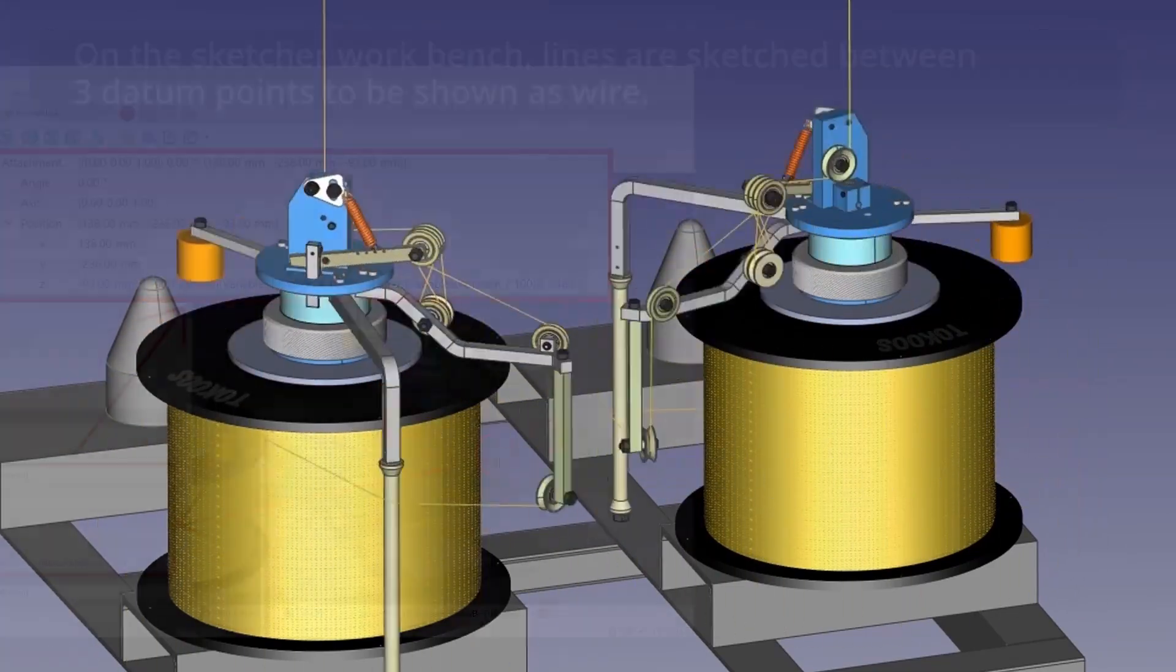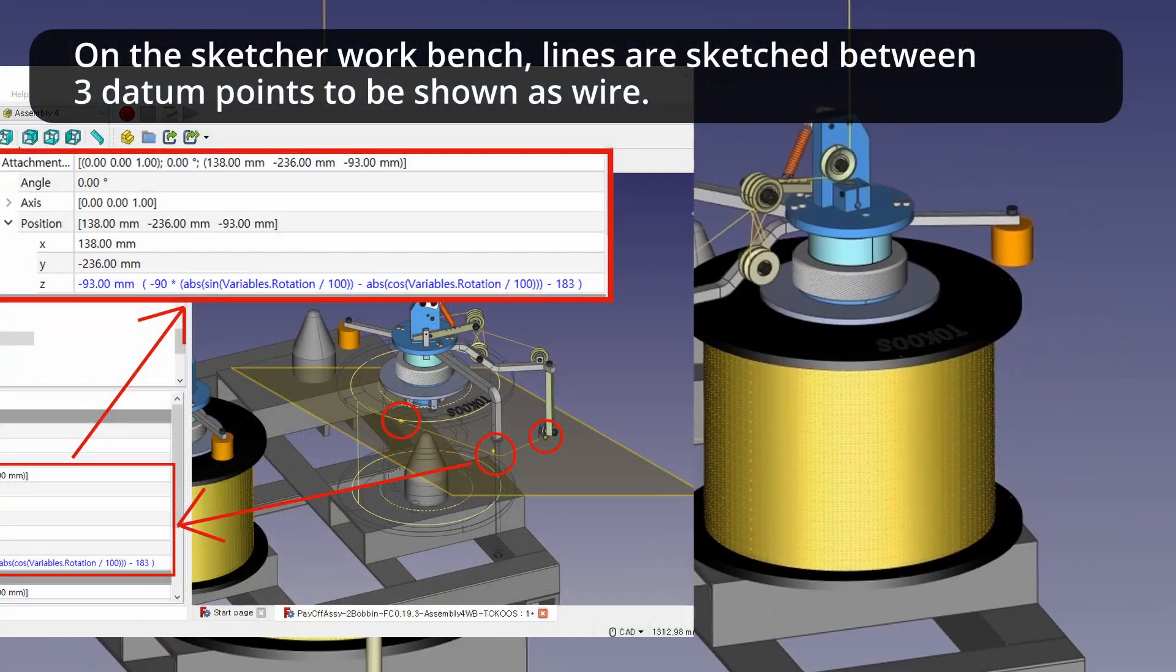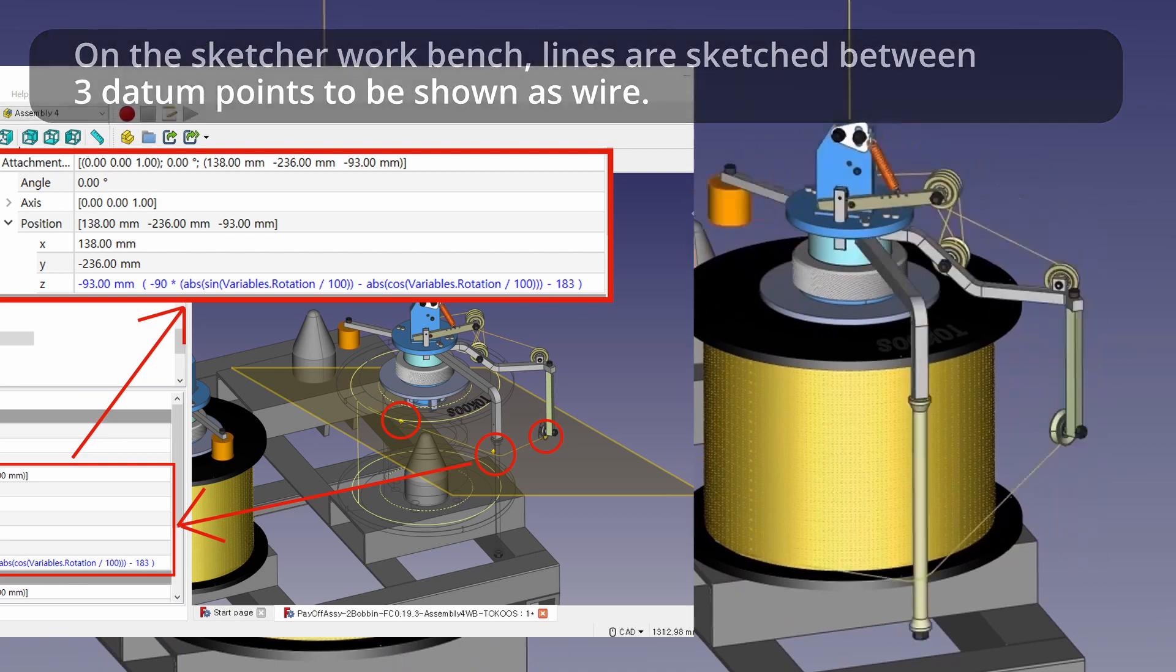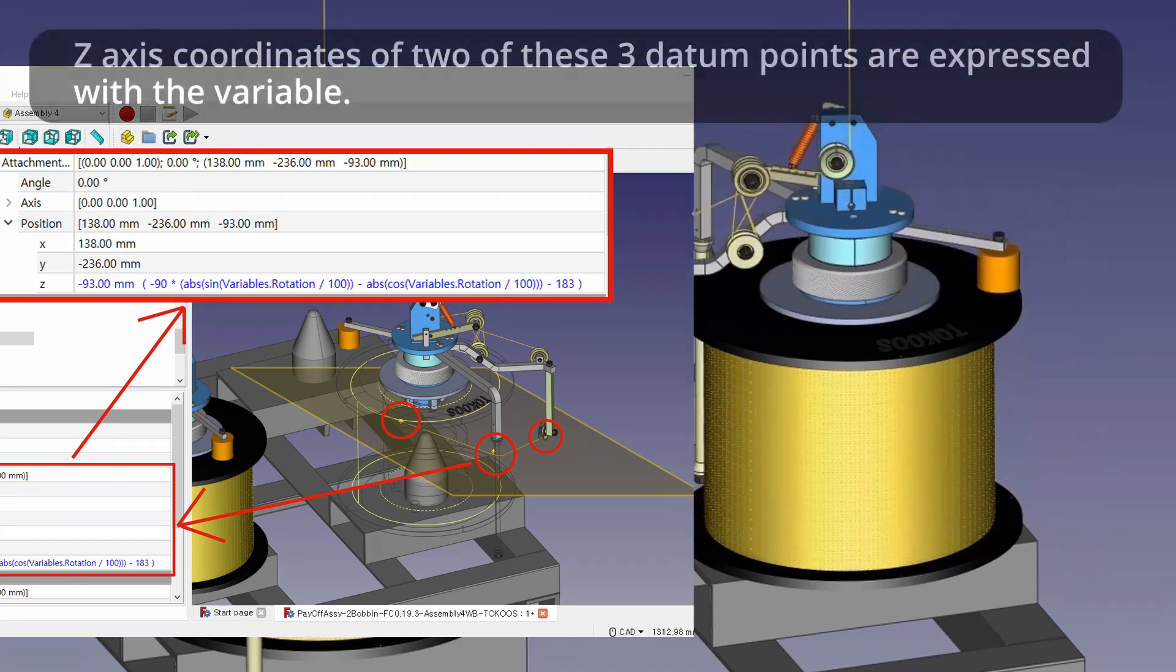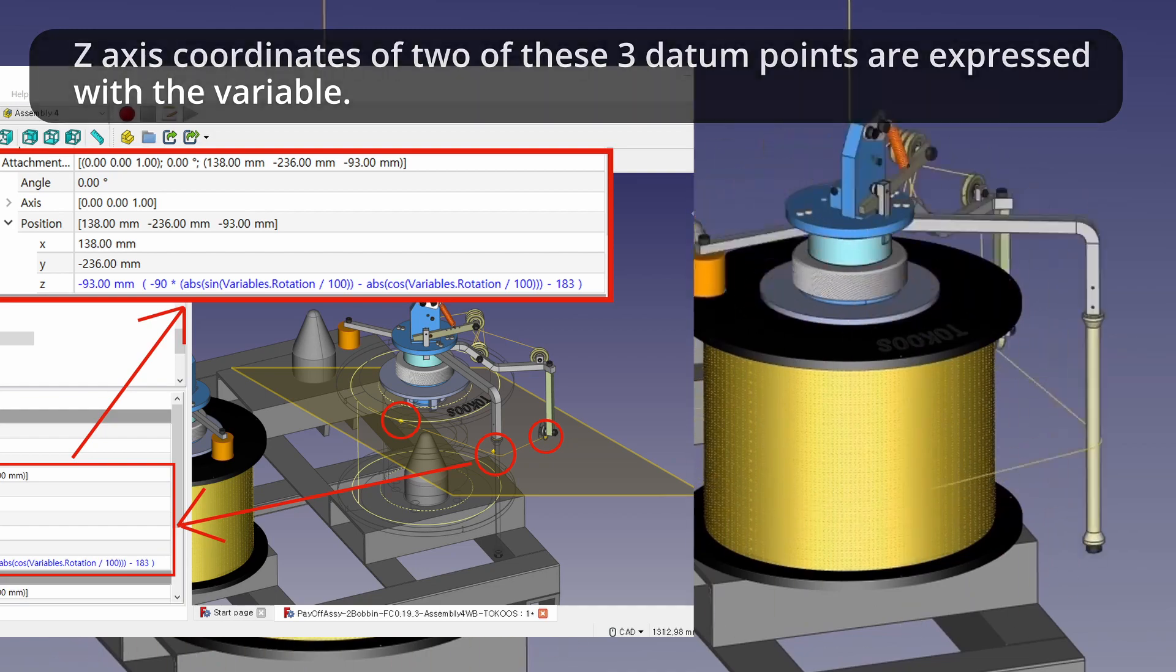For the animating of the up-down reciprocating movement of the wire, on the sketcher workbench, lines are sketched between 3 datum points to be shown as wire. Z-axis coordinates of 2 of these 3 datum points are expressed with the variable.